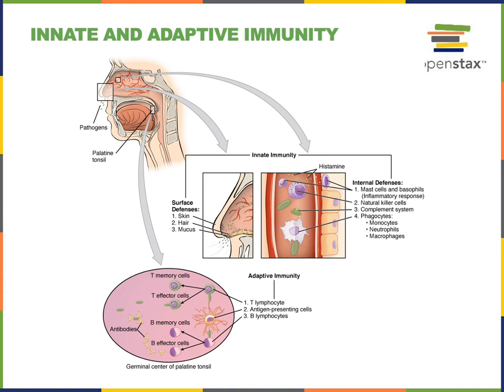Innate immunity includes surface defenses. For example, the skin forms a physical barrier to pathogens. Even as we breathe and draw air with pathogens into the respiratory tract, there's hair at the entrance to the nasal cavity that can help filter pathogens out and serve as another surface defense. The respiratory tract is also lined with a mucus membrane that secretes mucus, which can trap pathogens and contains defense proteins that help protect against infection.